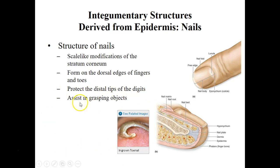Nails don't really have the same function they did hundreds of years ago. We cover our nails and wear shoes, so we have protection in the form of footwear. We also don't use our nails in the same way — two or three hundred years ago we had to tear our food apart because we didn't have the tools we do now. Because of this, nails are becoming kind of obsolete.